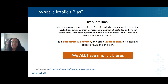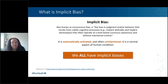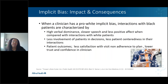I want to read the definition of implicit bias — also known as unconscious bias. Implicit bias is the bias in judgment and/or behavior that results from subtle cognitive processes that often operate at a level below conscious awareness and without intentional control. Bias is automatically activated, often unintentional, and a normal aspect of the human condition. I always like to point out that we all have implicit biases — it's just that people of color typically are the ones most affected by it in patient care.